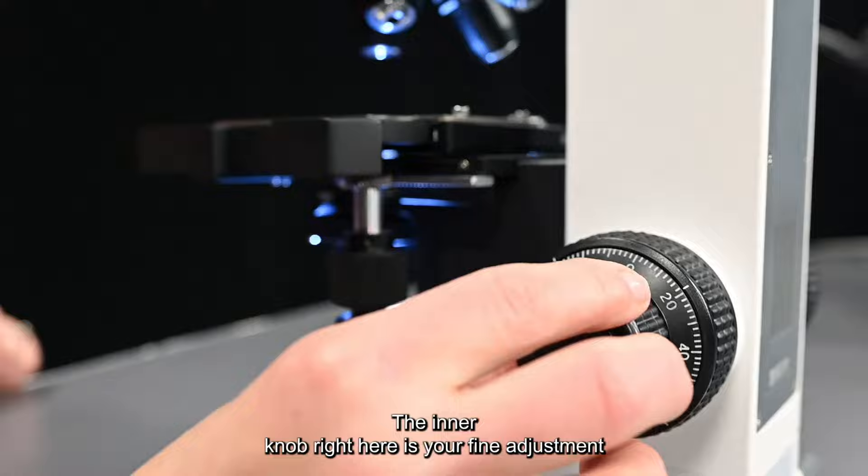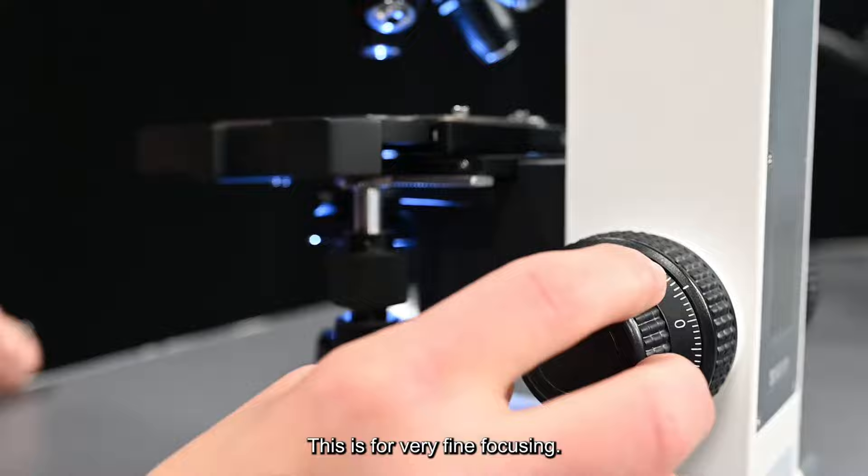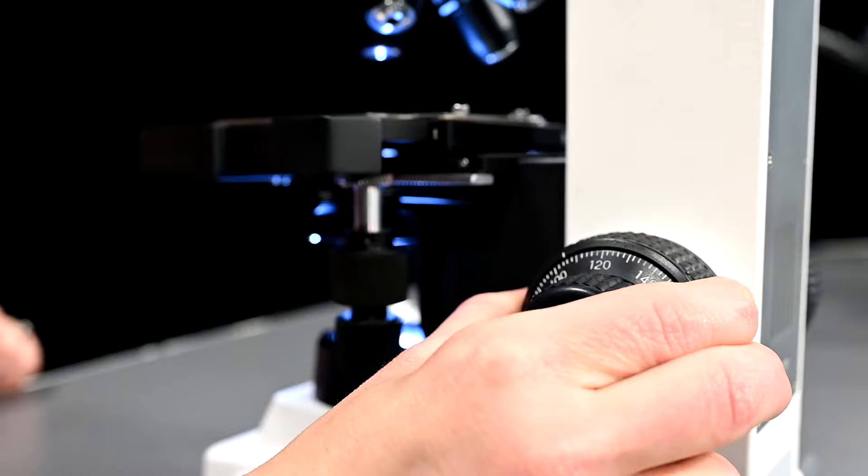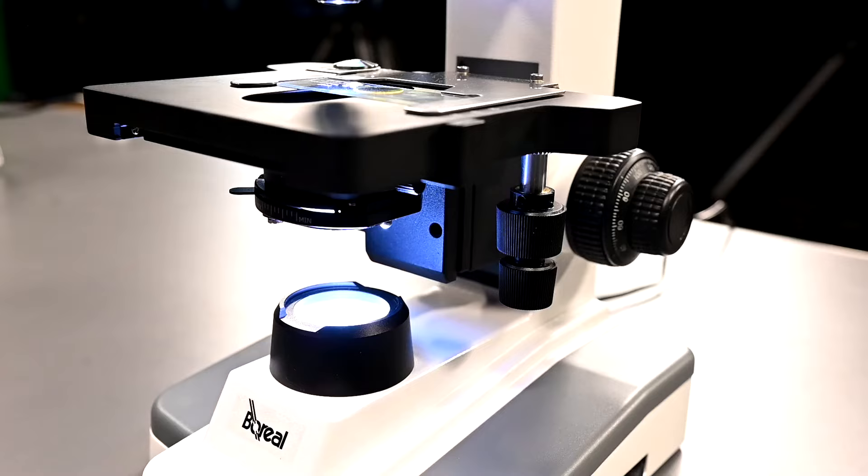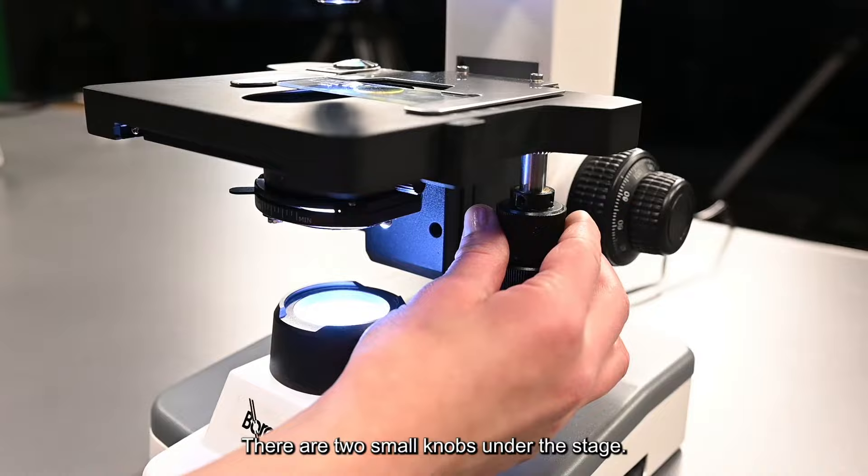The inner knob right here is your fine adjustment and it does not move the stage greatly up or down. This is for very fine focusing. You're going to use your coarse adjustment and you will use your fine adjustment when focusing.